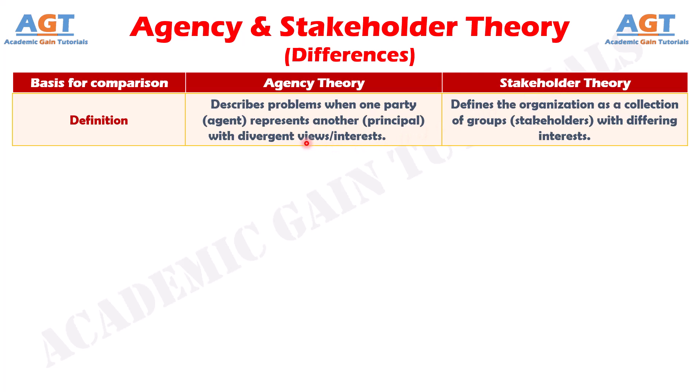Difference number one: agency theory deals with conflicts between principals and agents, while stakeholder theory considers the interests of all groups affected by the organization.